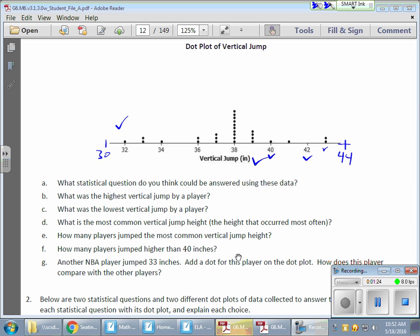But now using the dot plot, we can very quickly answer some questions. First question being, what statistical question do you think could be answered using this data? And that statistical question is pretty obvious. We're just looking at the data. You can say something like, what are the vertical jump heights of NBA players? And keep it as simple as that.